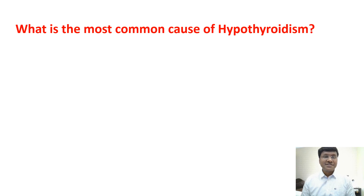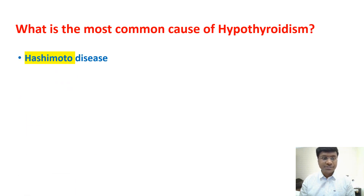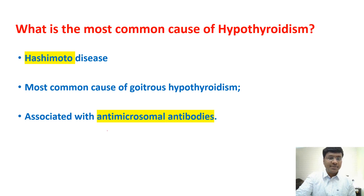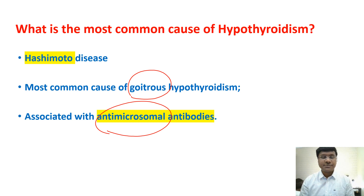First and foremost, what is the most common cause of hypothyroidism? The most common cause is an autoimmune condition — Hashimoto's thyroiditis or Hashimoto's disease. Antibodies are formed against the thyroid follicular cells; these are called antimicrosomal antibodies. There are also antibodies against TSH receptors and thyroglobulin. This is also the most common cause of goitrous hypothyroidism, with painless enlargement of the gland. In India, Hashimoto's is the most common cause, whereas globally it is iodine deficiency.